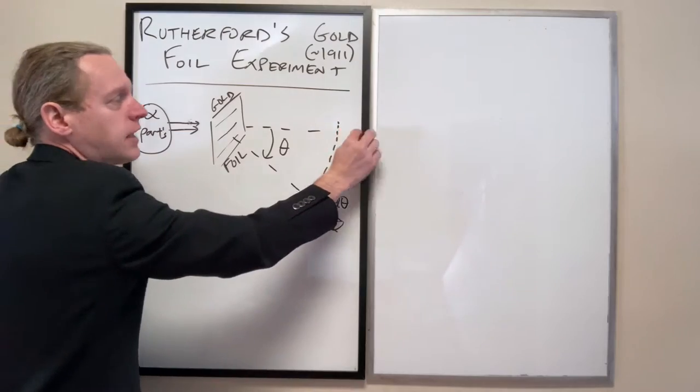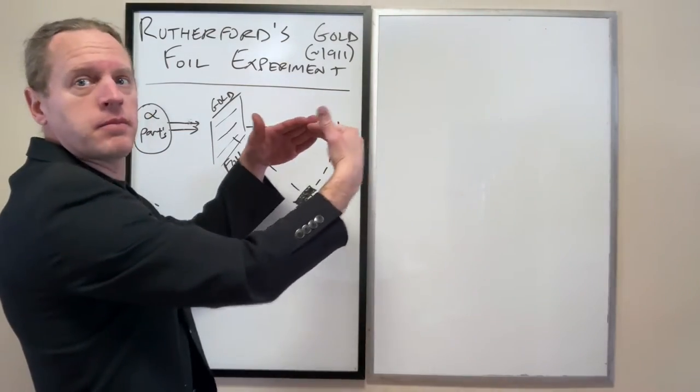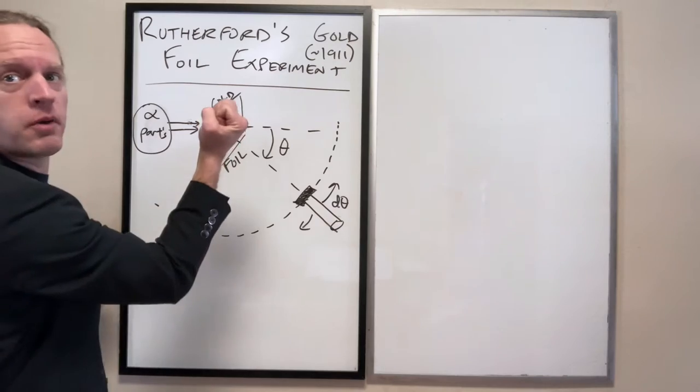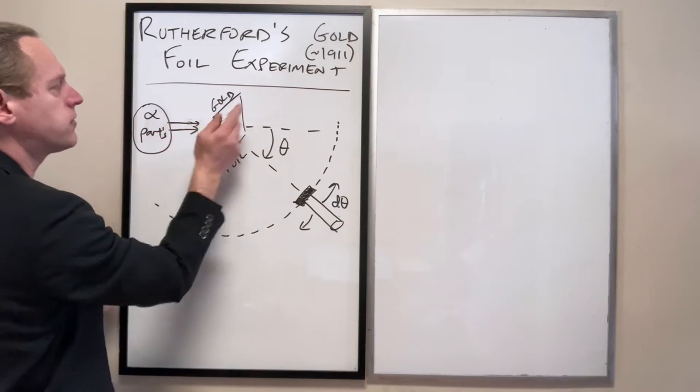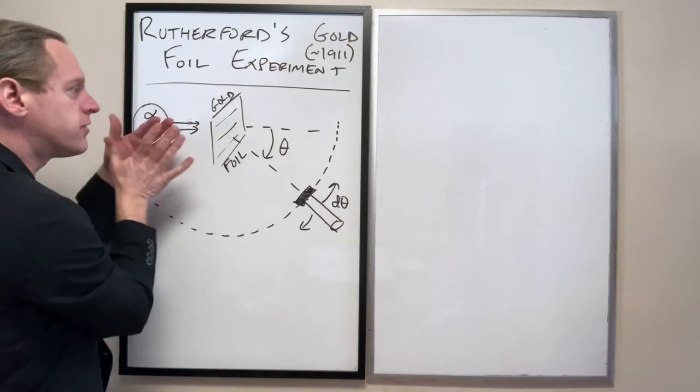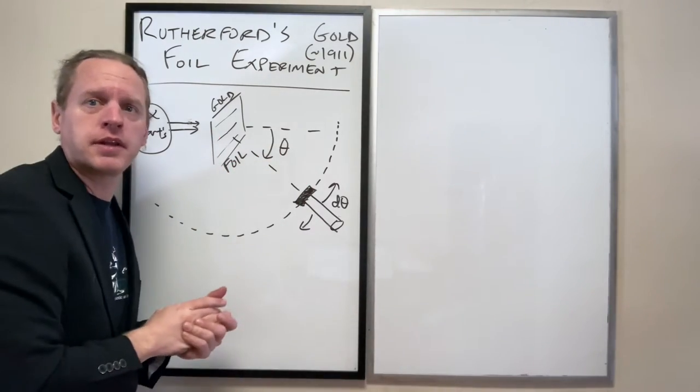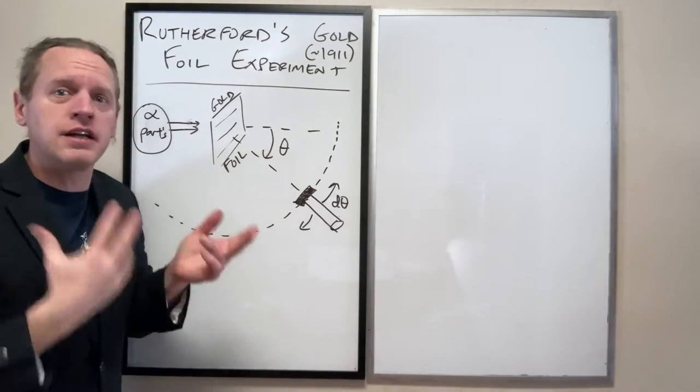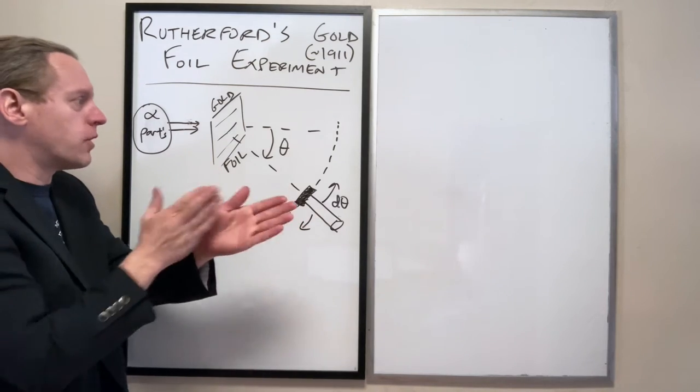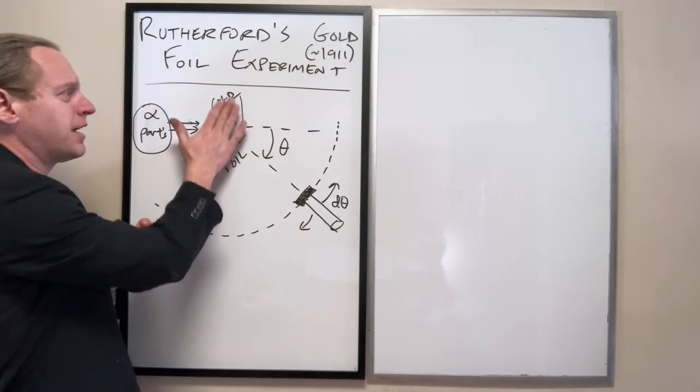Now, it's not exactly at theta equals zero. There is some spread. And what that tells us is, as these small helium nuclei pass through this layer of gold atoms, some of them are deflected by maybe a third of a degree, or maybe a degree and a half, or something like that. And our understanding is that they get too close to some of those positive particles that might make up that gold foil.